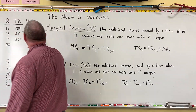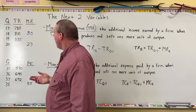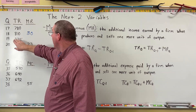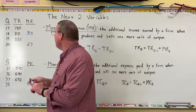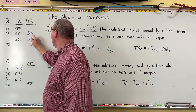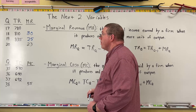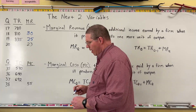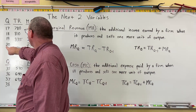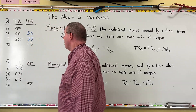What about the marginal revenue for the 19th unit? We take 835 minus 810. 835 minus 810 is 25. So the marginal revenue of the 19th unit is 25. Now we don't know the total revenue for the 20th unit, but we do know the marginal revenue of the 20th unit.